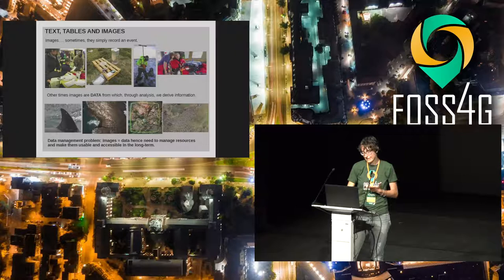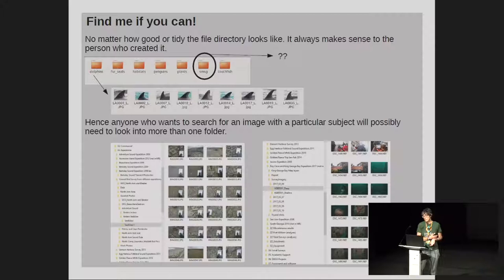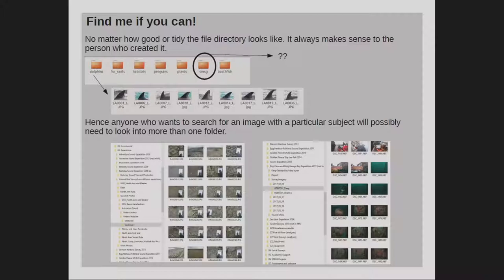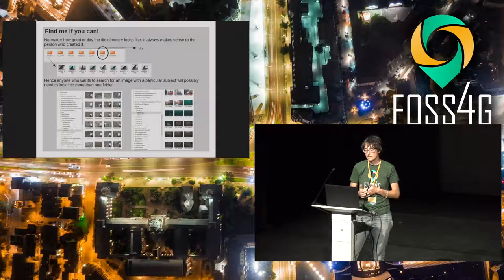Basically, the problem was the same: we've got images, these images are data, and they need to be managed. The problem is essentially the same one that people in life science had. What happens to those images most of the time is they are just thrown into the file system. Sometimes you might have people who do a proper naming of all the folders, making it easier to find images afterwards after everyone comes back from the field season. But generally speaking, even if the file system is tidy, it makes sense only to the person who created it — and most of the time it's a big mess and very difficult to retrieve information.